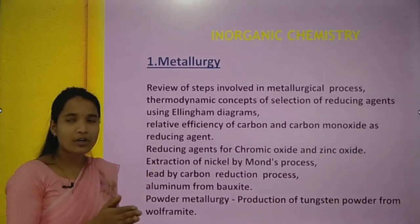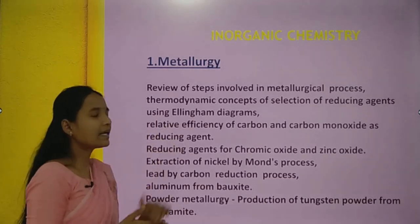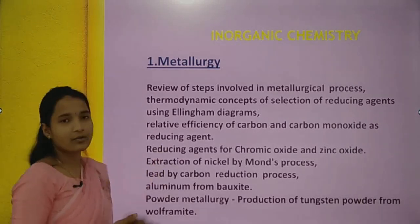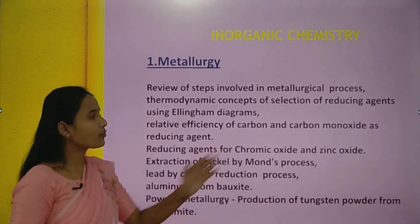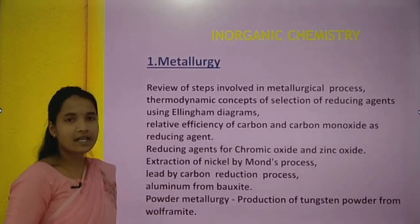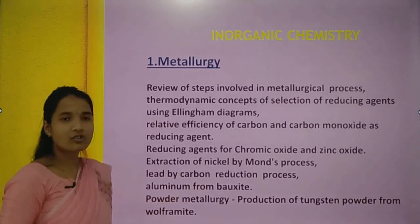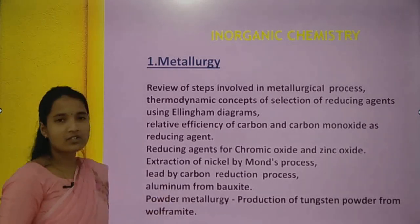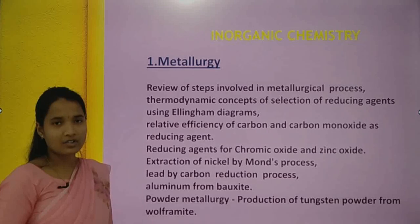The most important concept is the Ellingham diagram and the relative efficiency of carbon and carbon monoxide as reducing agents. Next is the reducing agent for chromic oxide and zinc oxide, followed by the extraction of nickel by the Mond process, extraction of lead by carbon reduction process, and extraction of aluminium from bauxite.